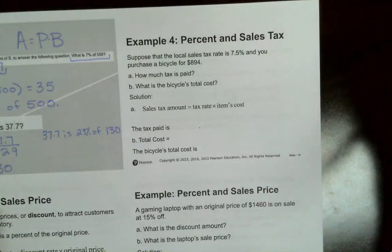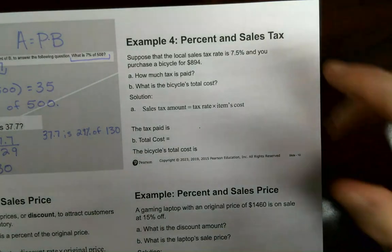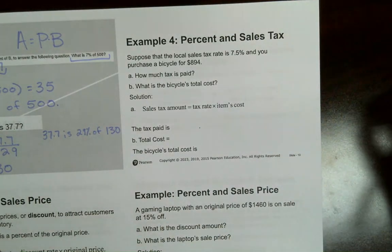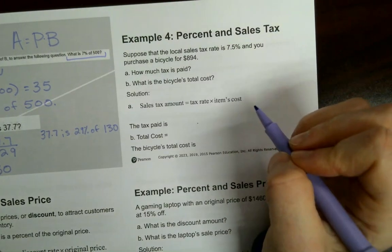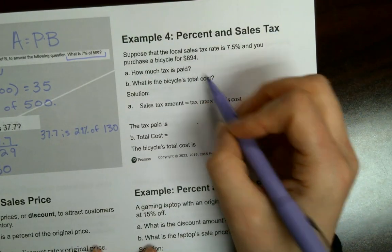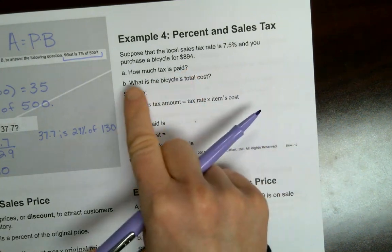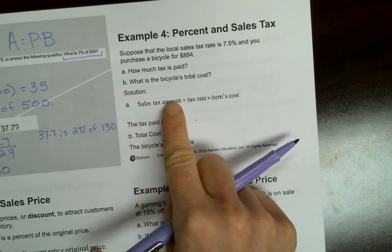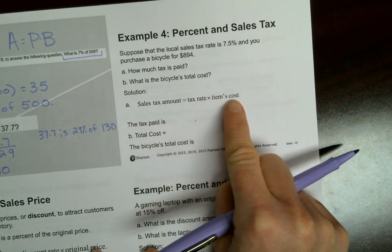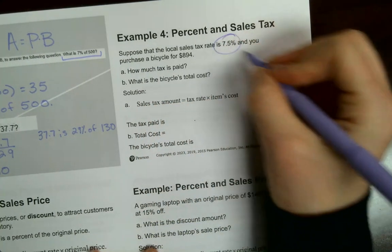Sales tax problems. This is similar to probably what you do whenever you go shopping sometimes. Suppose that the local sales tax rate is seven and a half. You purchase a bike for $894 on which taxes paid was the total cost. So we are going to use sales tax equals the tax rate times the item's cost.